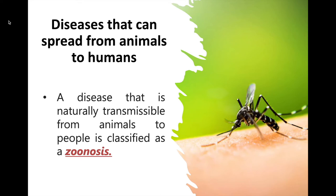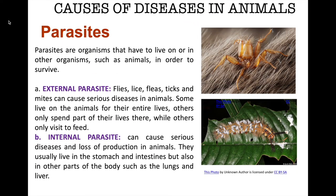So what are the causes of diseases in animals? There are many causes of diseases in animals. Knowledge of what causes disease and how animals can get a disease helps us to know how to prevent disease and to treat sick animals. First, we have parasites. Parasites are organisms that have to live on or in other organisms such as animals in order to survive. Most parasites are easy to see, although some mites and early stages of worms can only be seen under a microscope.